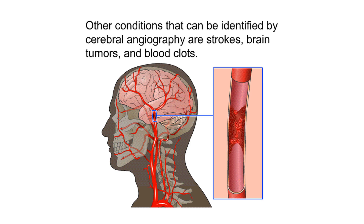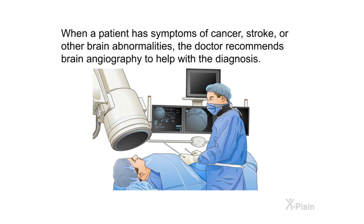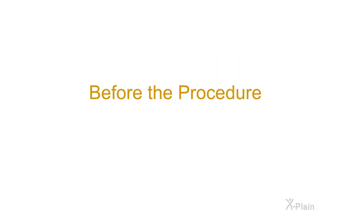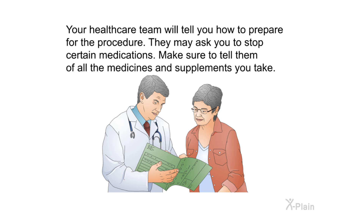Other conditions that can be identified by cerebral angiography are strokes, brain tumors, and blood clots. When a patient has symptoms of cancer, stroke, or other brain abnormalities, the doctor recommends brain angiography to help with the diagnosis. If a patient has brain surgery scheduled, the neurosurgeon may request brain angiography to help plan the surgery.